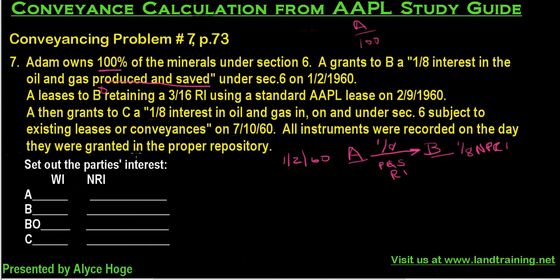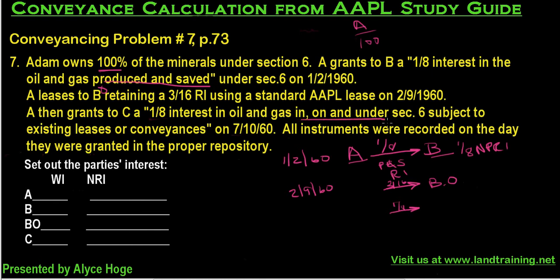That conveyance is under section six, dated January 2nd, 1960 — this is a date-sensitive problem. Then A leases to Big Oil and retains a three-sixteenths override under a standard lease on February 9th, 1960. A then conveys to C a one-eighth interest in oil and gas in, on, and under section six, subject to existing leases or conveyances — that was on July 10th, 1960.